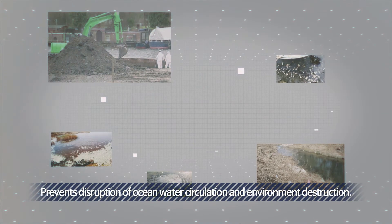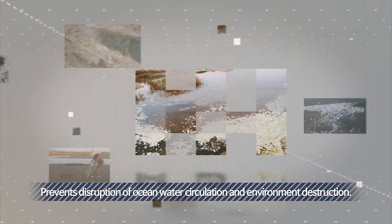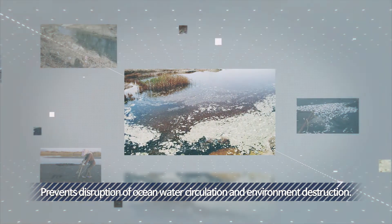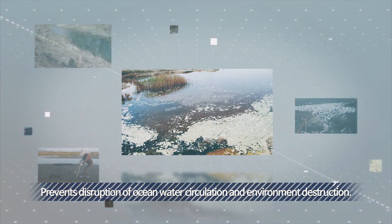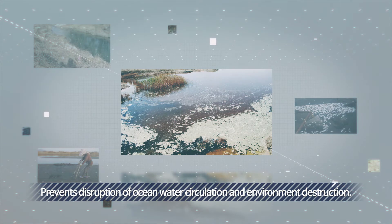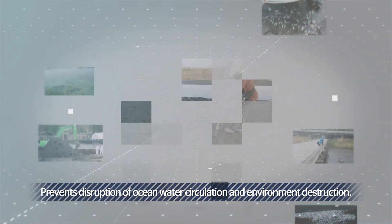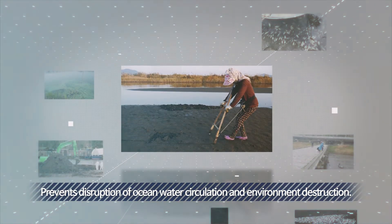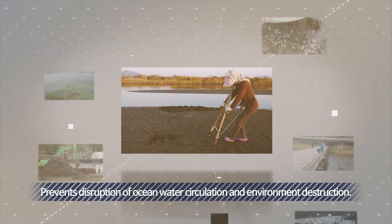Shihua Lake, Saemangum, and Taewan Gaorin Bay are examples of tidal power plants disrupting water quality and destroying ocean wildlife. This new system prevents these problems.